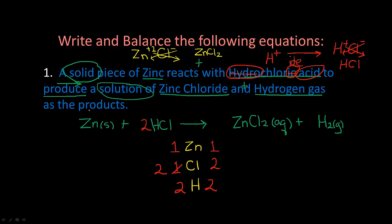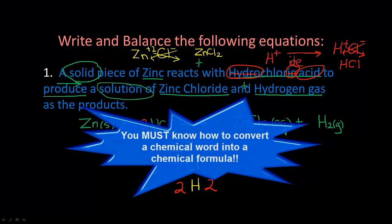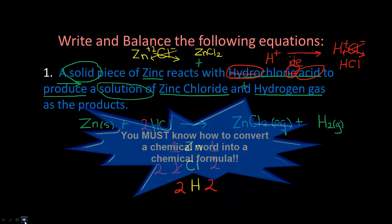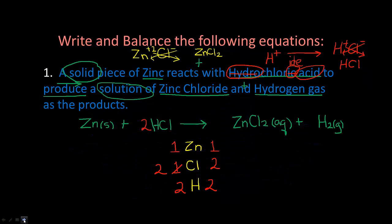This is a balanced equation. If you cannot write these formulas correctly, you will not be able to balance them correctly. It's very important that you know how to convert a word formula into a chemical formula. Let's go on to the next example.